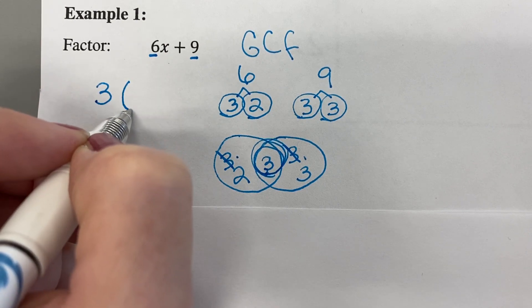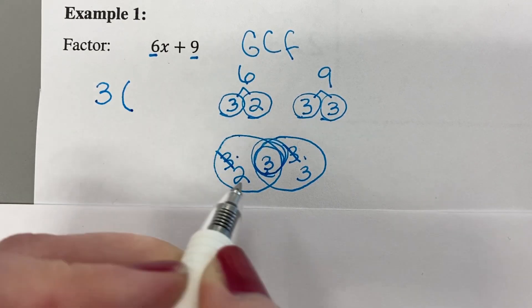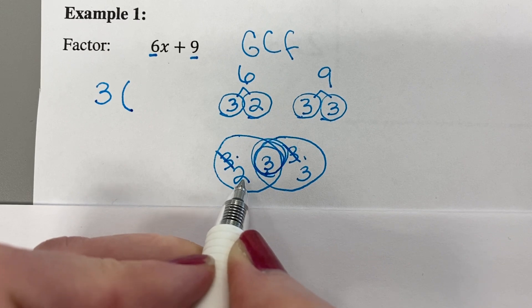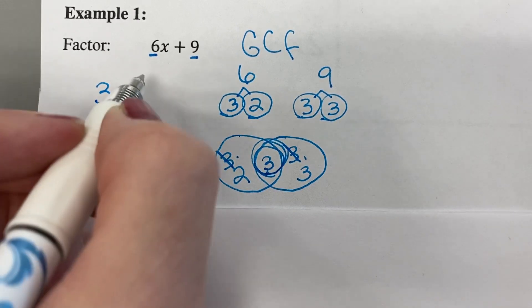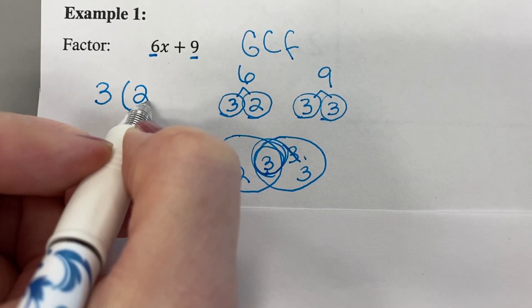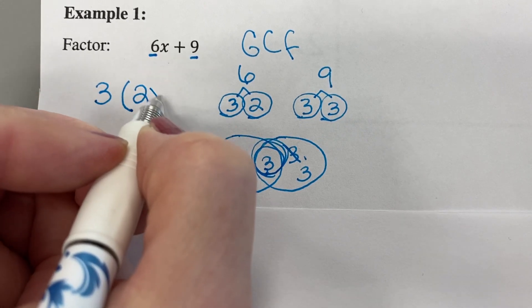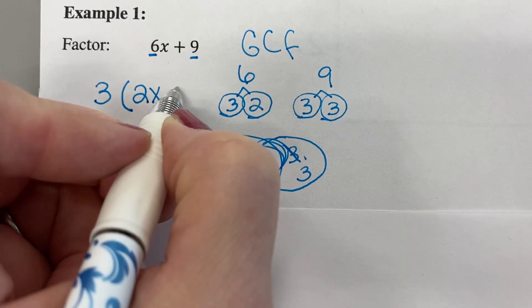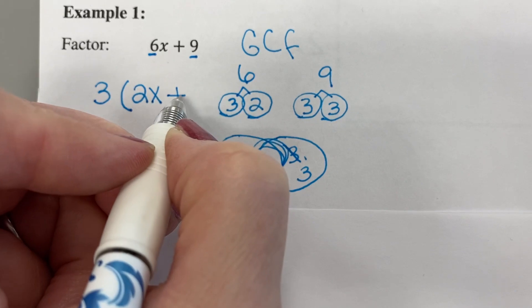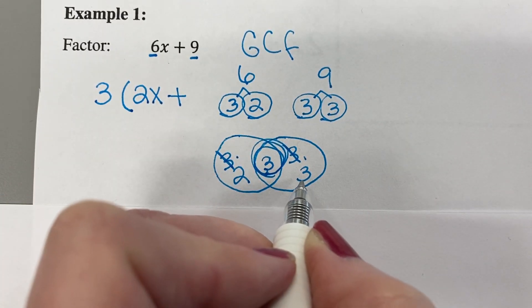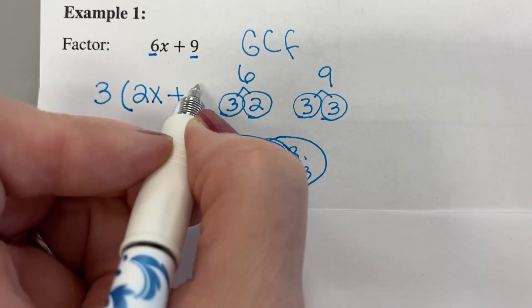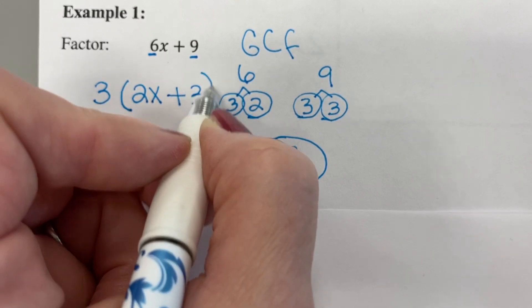Then you open parentheses. Whatever is left in this side of the circle, which is a 2, we're going to put here, along with this x, bring down the plus sign from here. And then whatever's left in this part of the circle, which is this 3, is going to go right there.